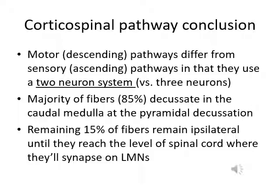In summary, the corticospinal motor pathway has only two neurons — unlike the sensory pathway which has three. Most corticospinal fibers decussate in the caudal medulla at the pyramidal decussation level. The other 15% stay ipsilateral until they reach the level of the spinal cord where they synapse with the lower motor neurons.